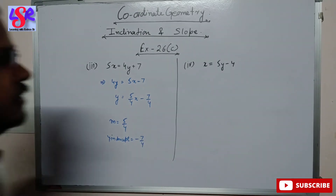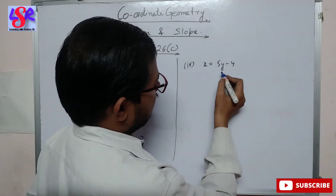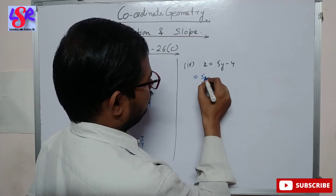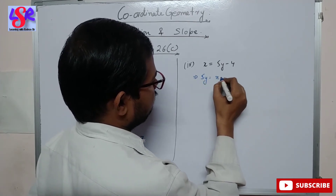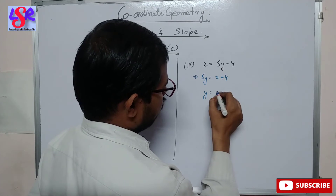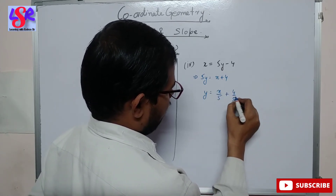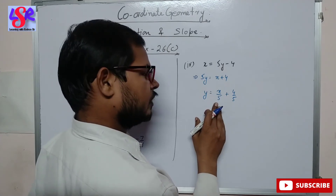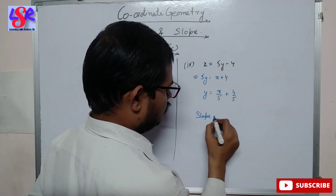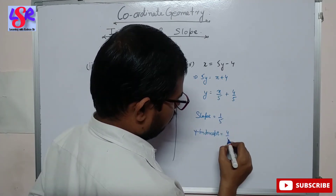Now let's see the fourth part. Here we are having x equals 5y minus 4. So this becomes 5y equals x plus 4. Then y equals x upon 5 plus 4 upon 5. In place of slope we are having 1 upon 5. So slope equals 1 upon 5 and y-intercept equals 4 upon 5.